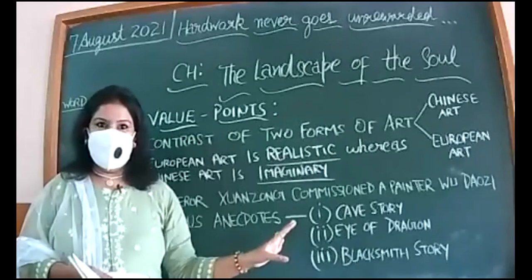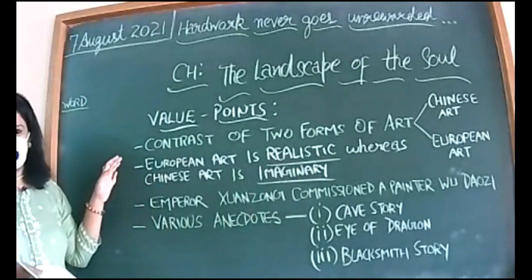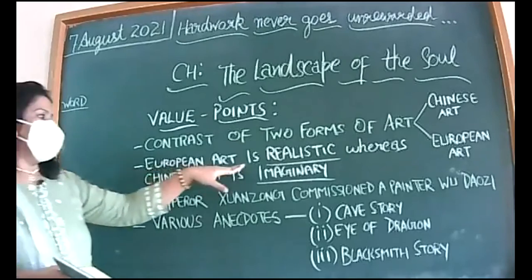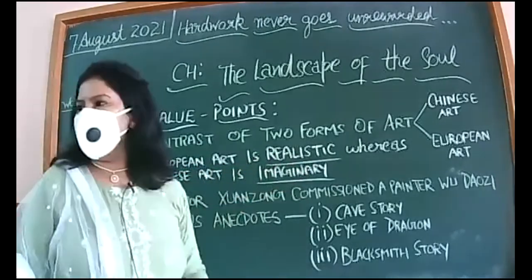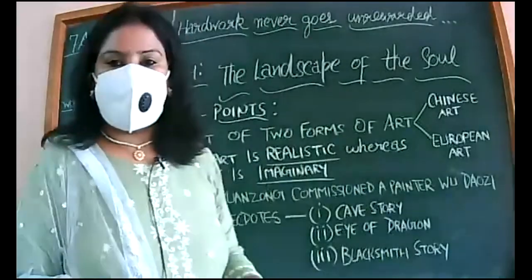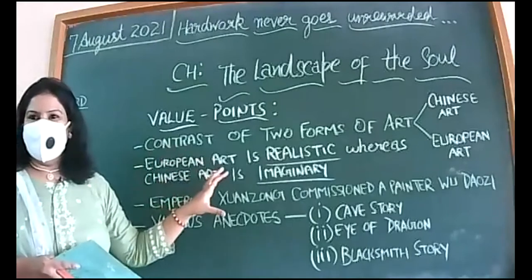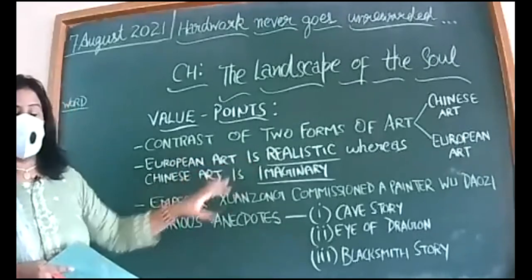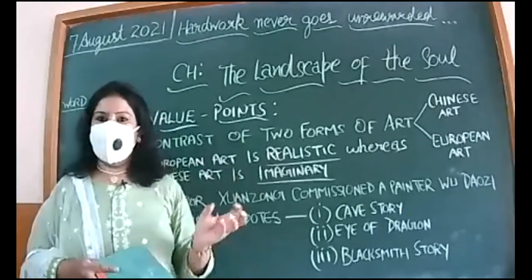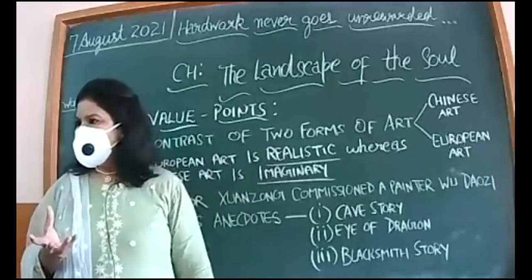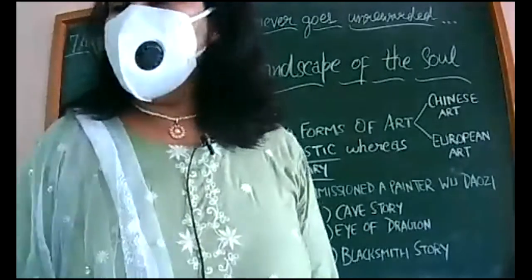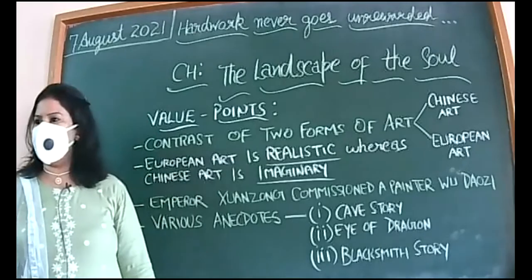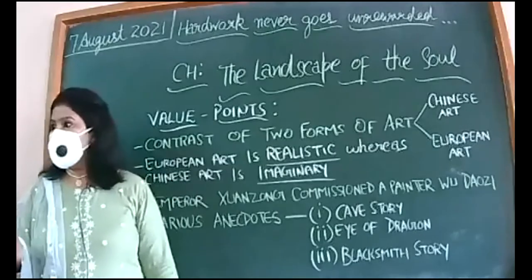The second main point is about European art, which is realistic and easily perceivable — clear. When we look at a piece of painting we are able to understand it. It is very realistic, based on real facts, and the painter just wants to borrow your eyes. If it's a picture of an animal you will see an animal; if it's a landscape, you will understand — this is a landscape.